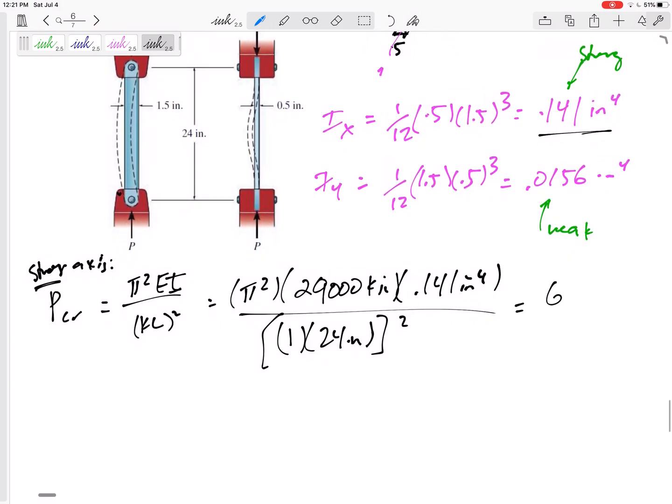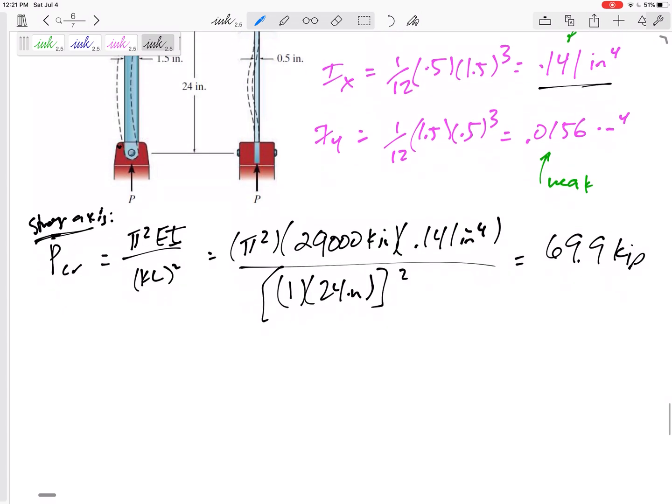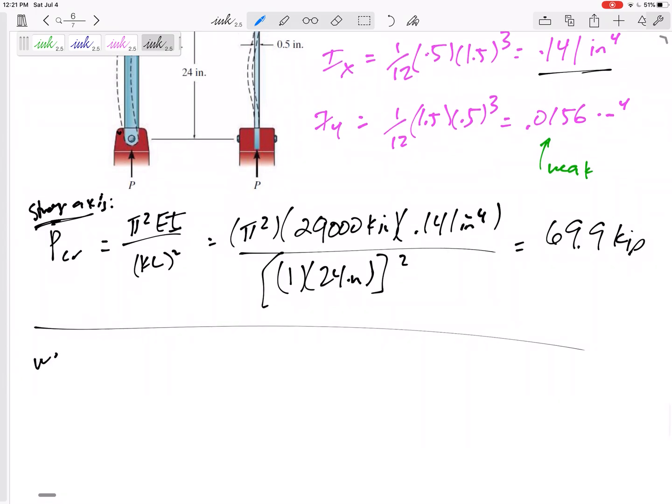So the P critical is 69.9 Kips. That is the force that it would buckle about the strong axis. That might be my answer, but what if it had already buckled? What if the weak axis buckles easier?